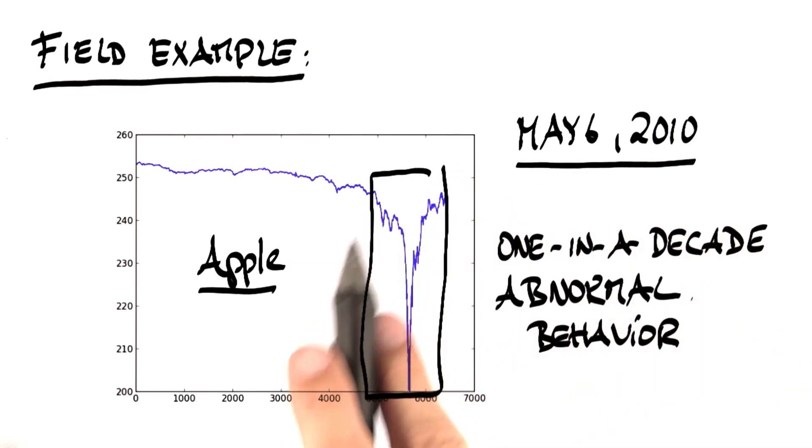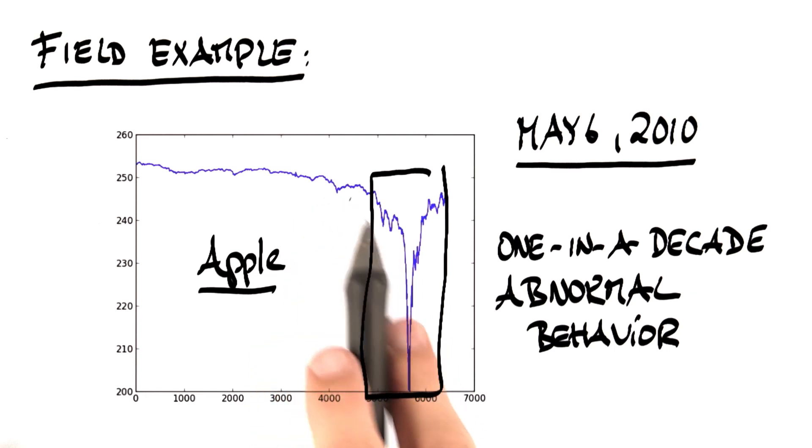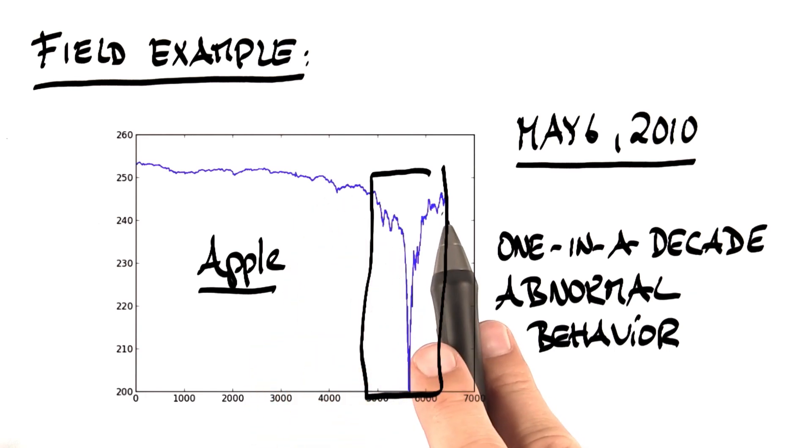And as a statistician, we might care about writing software that finds these kind of behaviors so we stop trading and we don't fall into the trap of selling our stock at an unfortunate rate just because something really strange is happening. And that's a real example in which people lost millions if not billions of dollars.